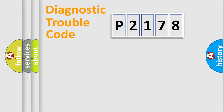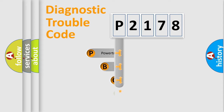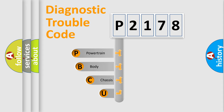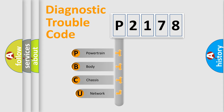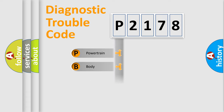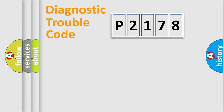Let's do this. First, let's look at the history of diagnostic fault code composition according to the OBD2 protocol, which is unified for all automakers since 2000. We divide the electric system of an automobile into four basic units: Powertrain, Body, Chassis, and Network.